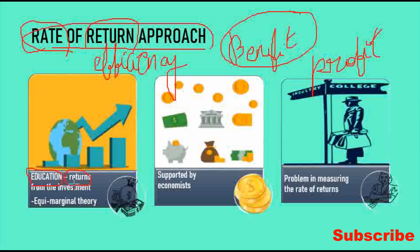This is an educational planning approach. We will calculate the rate of return — whether the benefit is satisfactory. If you have an education, calculate the rate of return approach. The returns from the investment — if you have an investment in a particular education like engineering or a doctor's seat — you will be able to invest and calculate the returns. Those returns must be equal, and you must get some benefit out of the investment in education.